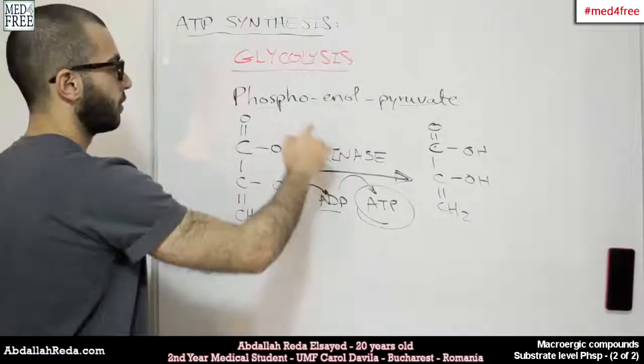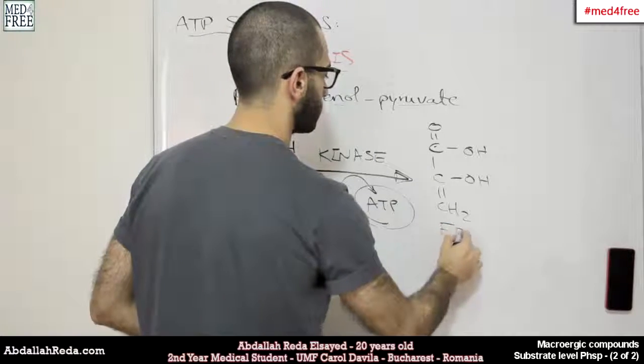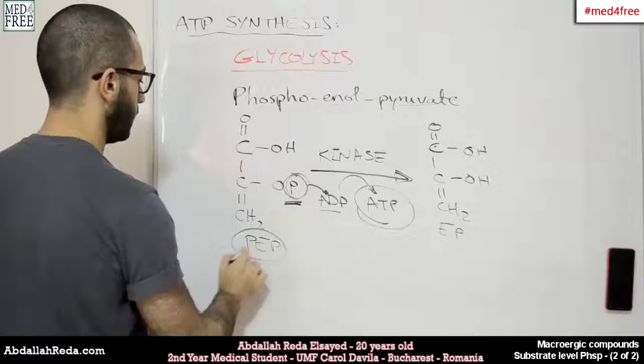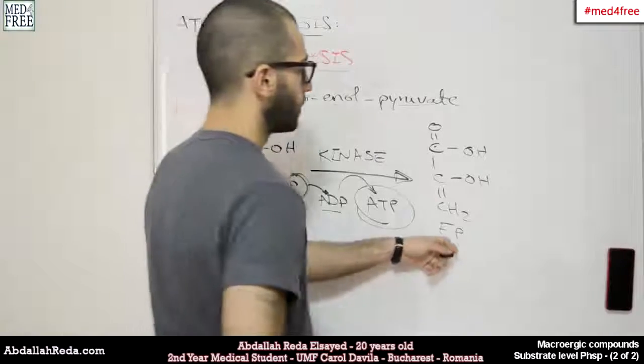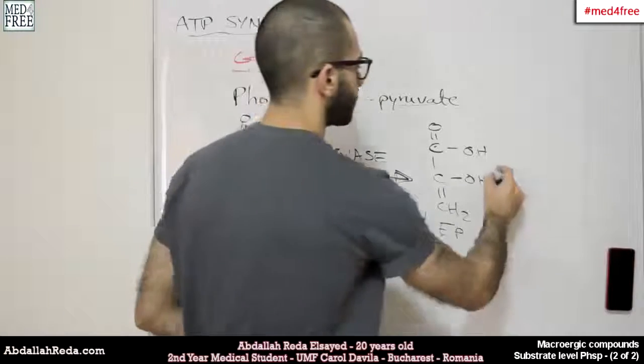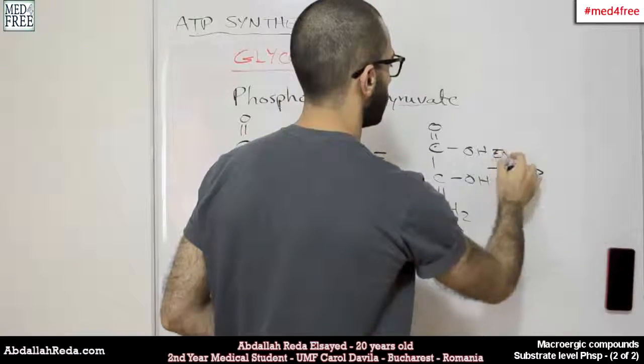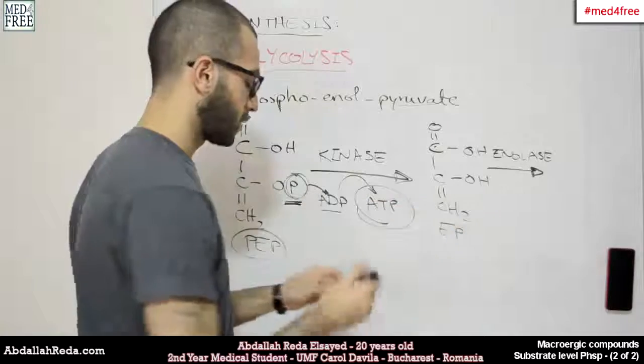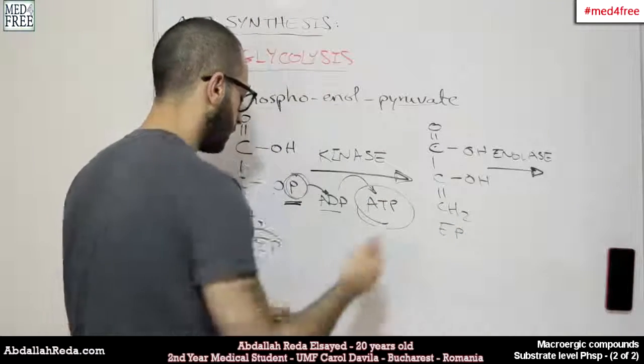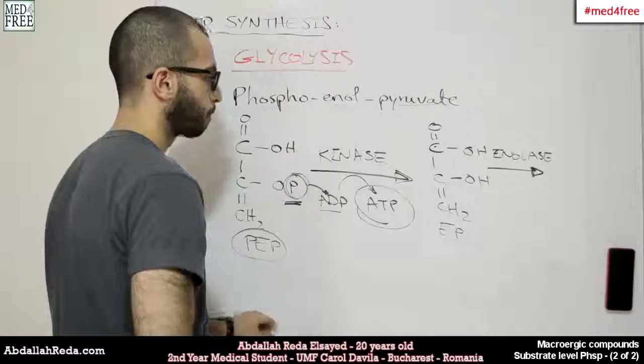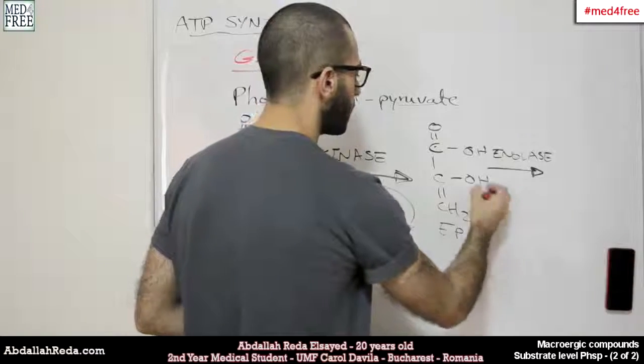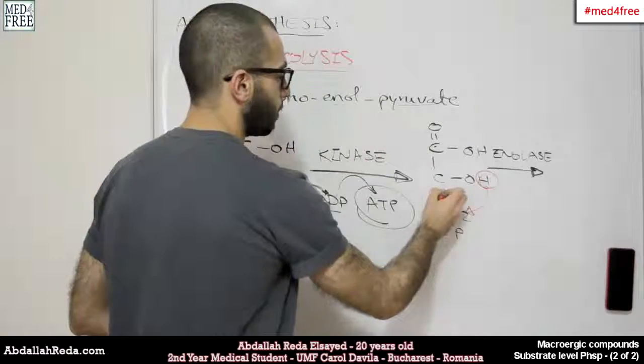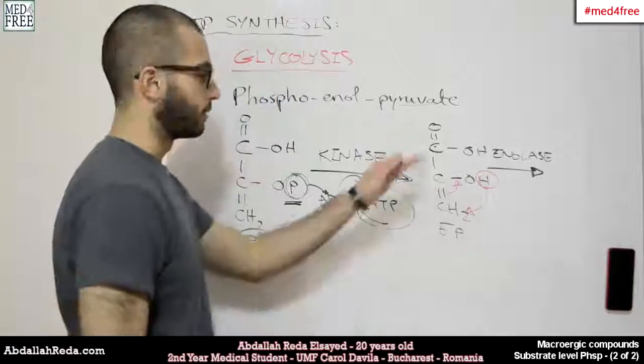Now we don't have phospho anymore, so it's enolpyruvate. Phosphoenolpyruvate can be written just PEP for short. This is enolpyruvate. Then we have another enzyme which is called enolase. Enolase will just change the structure. It will not add up or remove any other atoms. What would happen is that this hydrogen would be moved here, and so the double bond would be moved to the other direction.